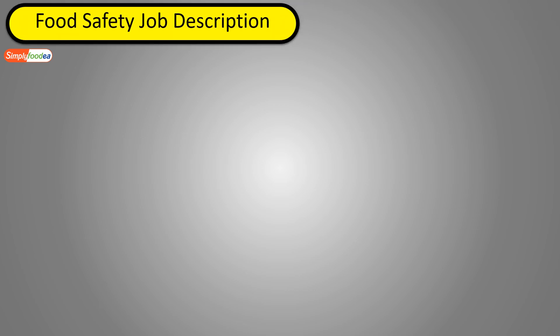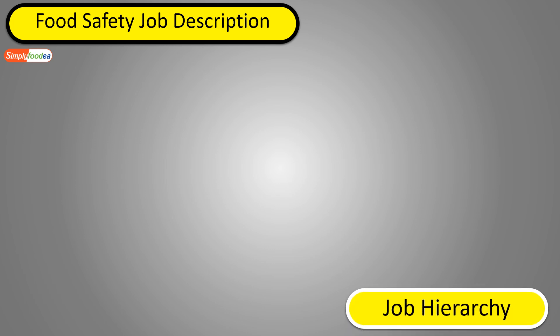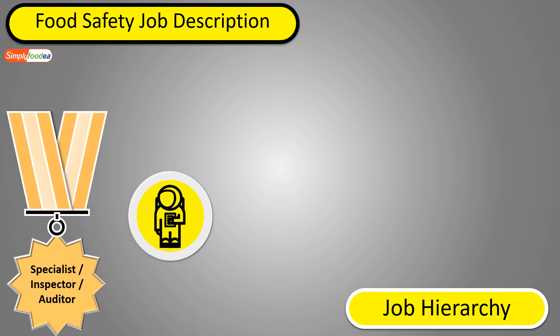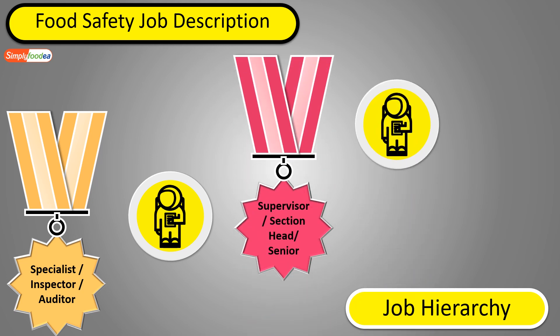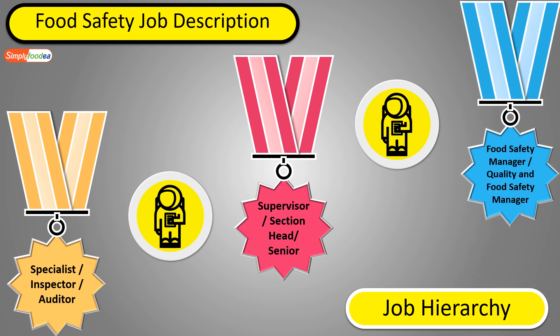Let's talk about the food safety job description. First of all, we must know what the job hierarchy is. It starts with a specialist, inspector, or auditor — so we can say food safety specialist, food safety inspector, or food safety auditor. Then food safety supervisor, section head, or senior. After that, food safety manager or quality and food safety manager. This is the hierarchy of the job. Now we'll explain the job descriptions of food safety jobs.